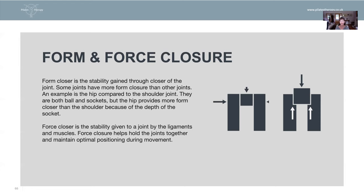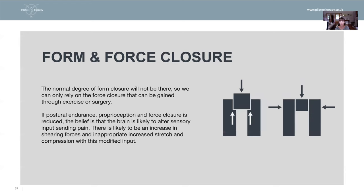Then we have force closure, which is the stability given by the joints, ligaments, and muscles. We know there's an alteration in support from the ligaments in hypermobiles. Some will have weaker muscles, some won't, because muscle tissue is not as dependent on collagen. So in this group of people, we're really looking at trying to strengthen the muscles in the most optimal way we can. A normal degree of form closure won't be there, so we rely on force closure for stability, through either exercise or surgery.